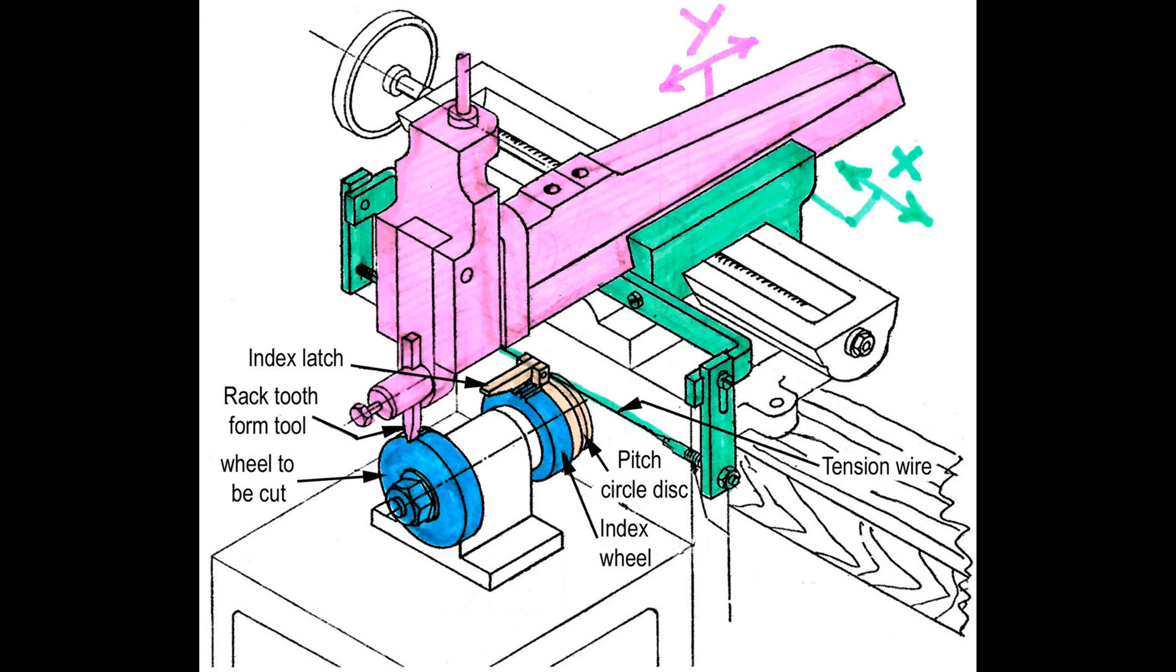The generation motion is given to the gear wheel blank, blue color. For this, a steel wire is wrapped on a PCD diameter cylinder, orange color.